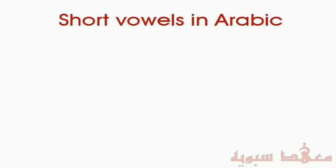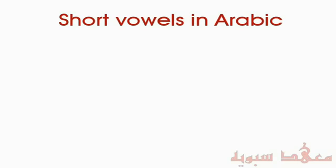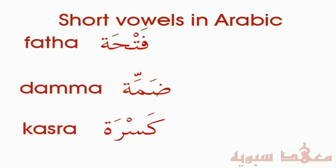In this video, I'm going to be explaining short vowels in the Arabic language. Unlike English, where we have five vowels — A, E, I, O, U — in Arabic we only have three, and they are what is known as Fatha, Dhamma, and Kasra.